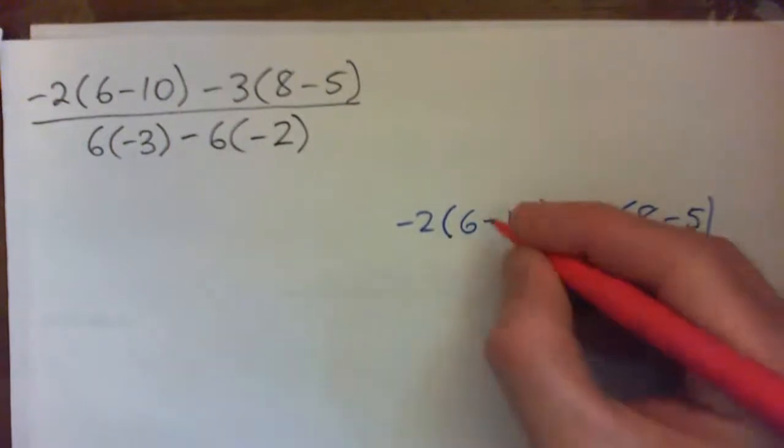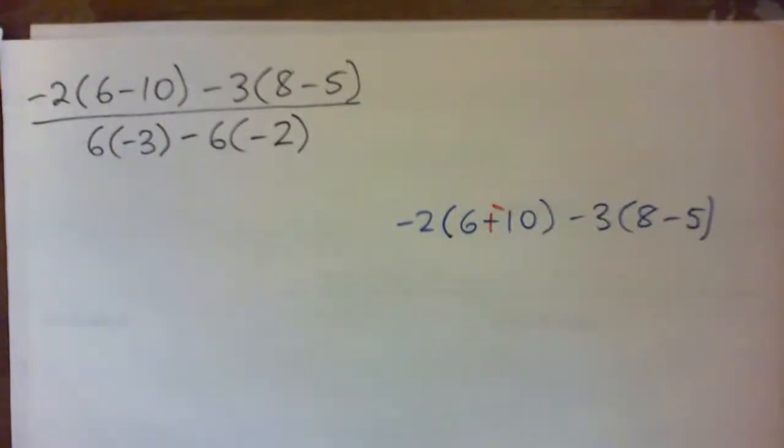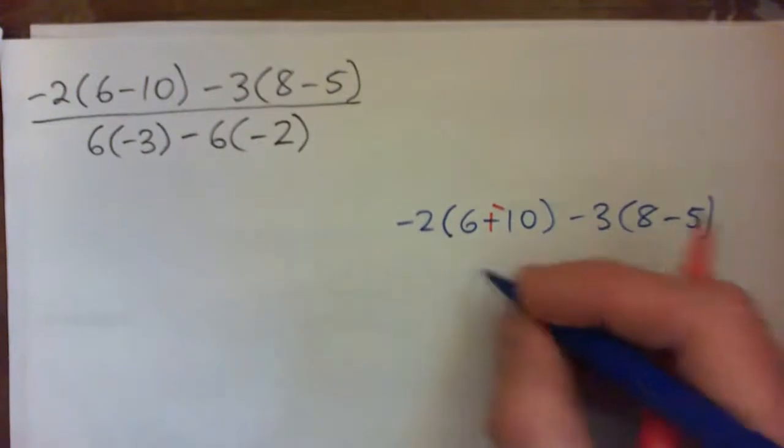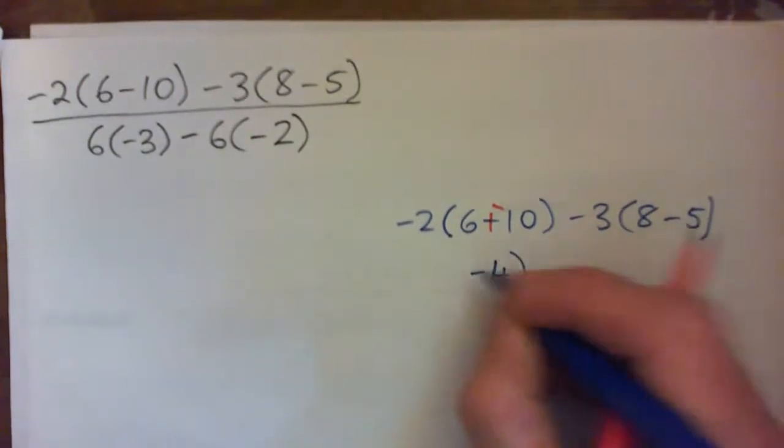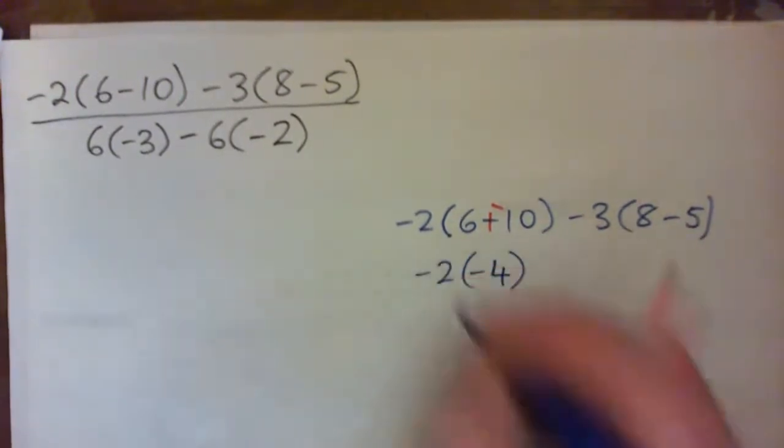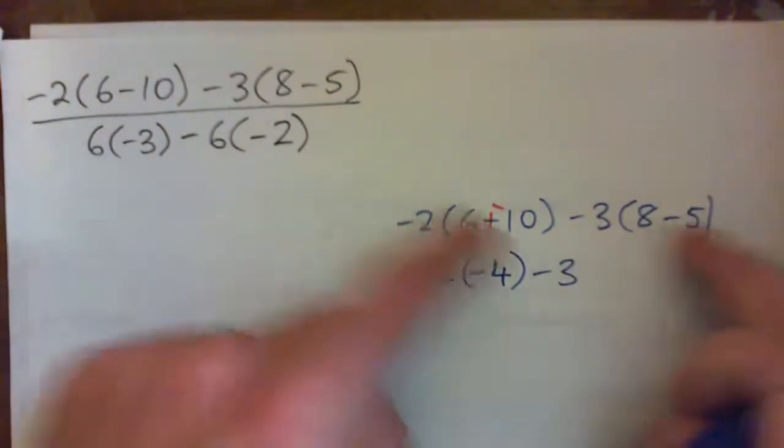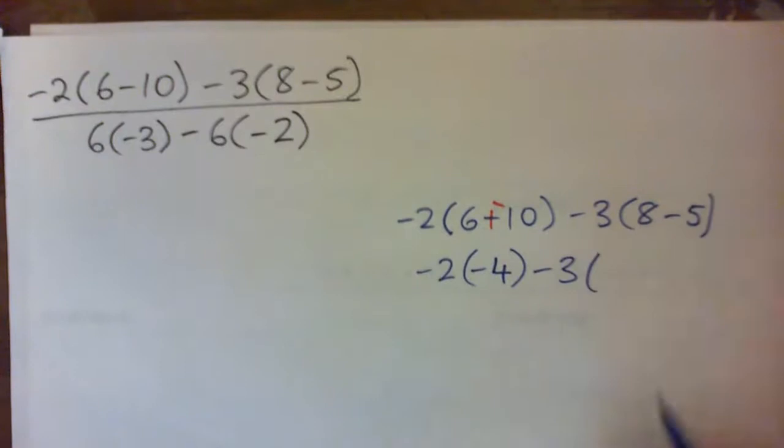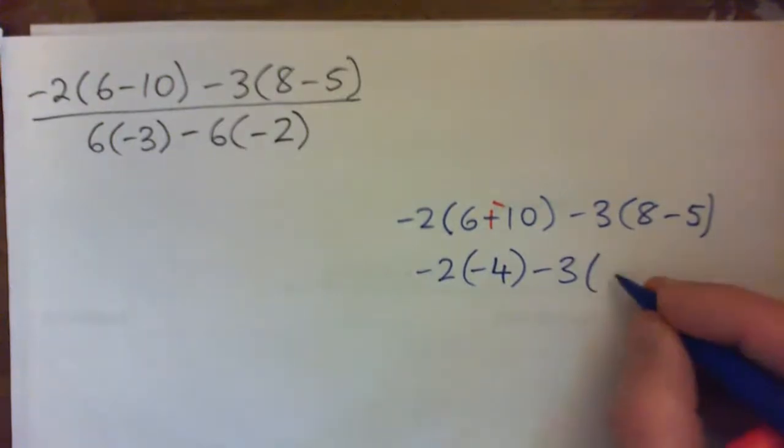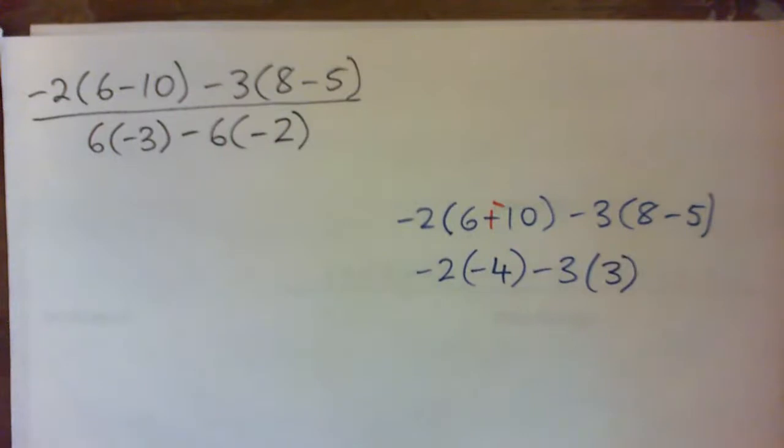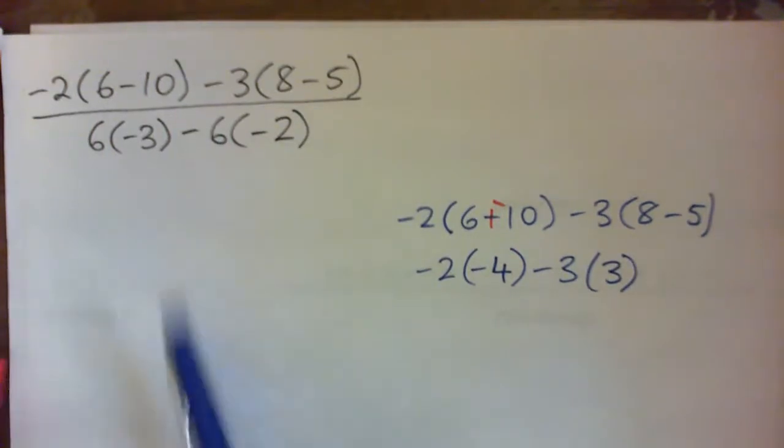Or I can change subtraction to plus negative. It says 6 plus negative 10. 6 positives, 10 negatives makes 4 negatives, right? So either way, that should be negative 4. And we're following PEMDAS, right? So that's why we're doing the things inside the parentheses first. And here I've got 8 minus 5, which is just 3, right? So you should have that much for the first, the top line.